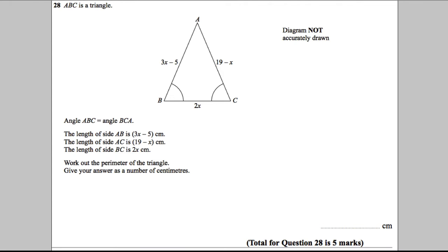Question 28. Let's get our highlighter out to make sure we have highlighted the key points. ABC is a triangle. Clearly, A to B to C draws out a triangle for us.